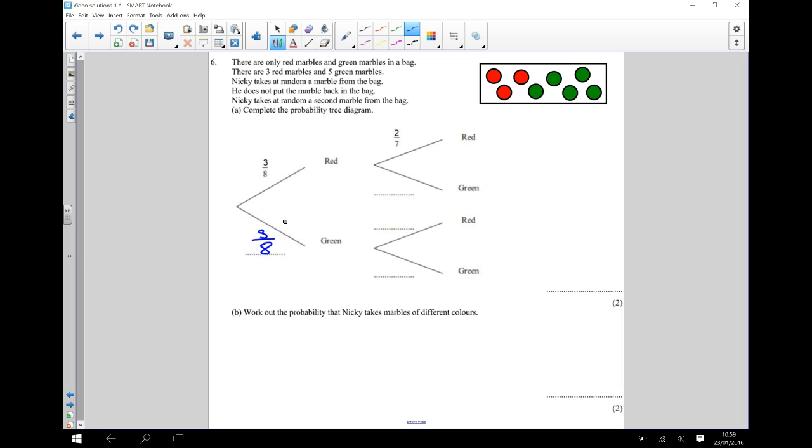Now, let's see what happens if we go down this branch here, so we're now considering what happens after he's taken a red marble. Remember, if he takes a red marble, it comes out of the bag and he doesn't put it back in, which means that there's only seven left. Two of them are now red. So the probability of him now picking a red is going to be 2 sevenths.